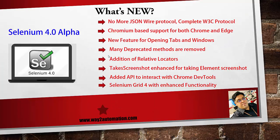Selenium 4 will now be using the W3C protocol completely for browser-driven communications. The earlier version of Selenium used the JSON wire protocol, which required encoding and decoding of the APIs. Selenium 4 will now use the standard W3C protocol to communicate between the driver and the browsers. The advantage is that W3C protocol does not require encoding or decoding of the API, and tests will directly communicate with the browser since all major browser vendors are on W3C.